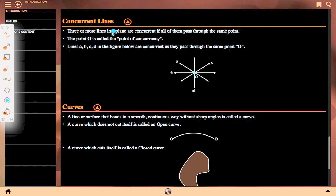Concurrent lines: Three or more lines in a plane are concurrent if all of them pass through the same point. Point O is called the point of concurrency. Lines A, B, C, D in the figure below are concurrent as they pass through the same point O. All the lines pass through O which is the center of concurrency.